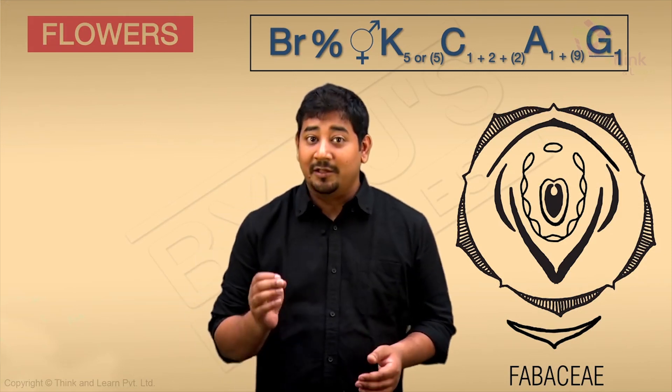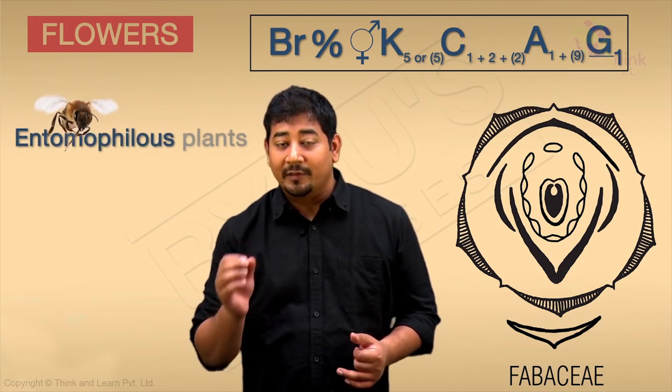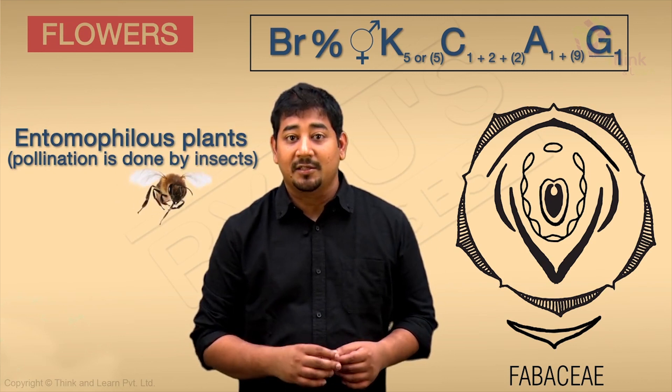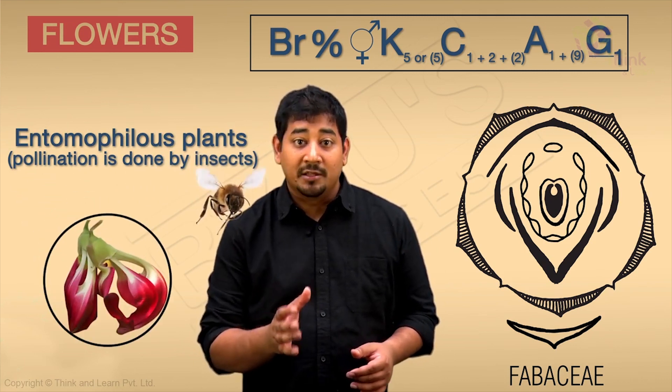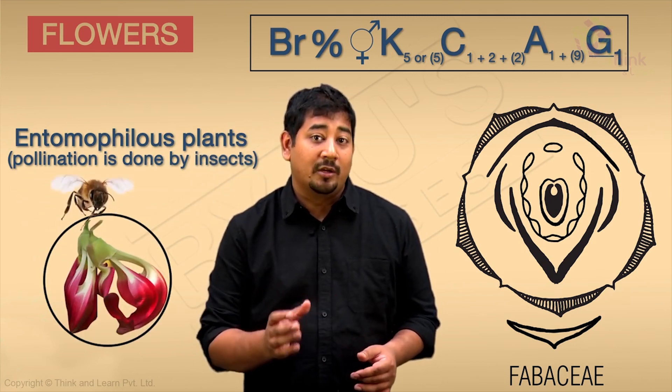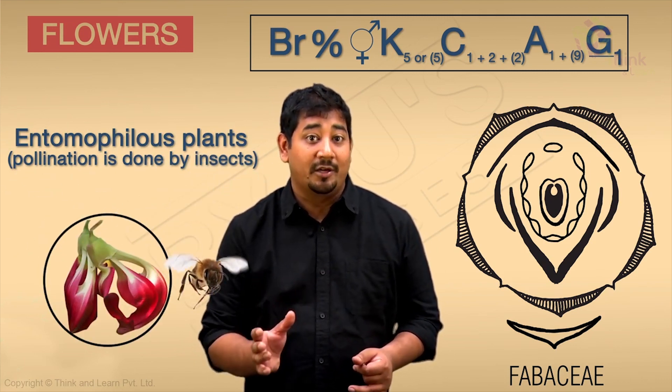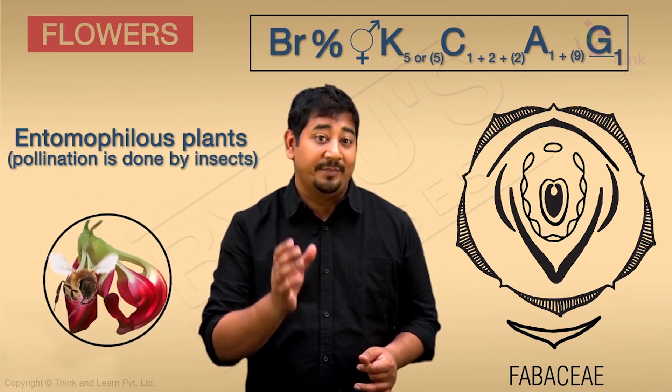Fabaceae are typically entomophilous plants, where pollination is done by insects. The flowers are usually showy and colorful to attract these insect pollinators, especially bees.